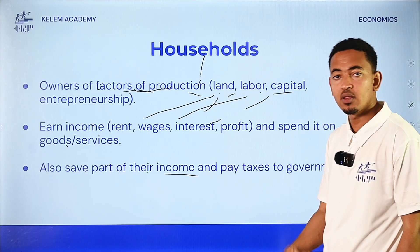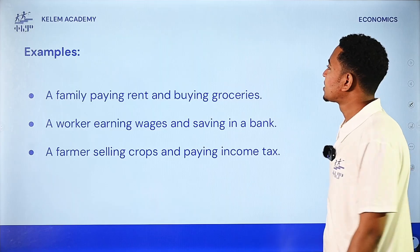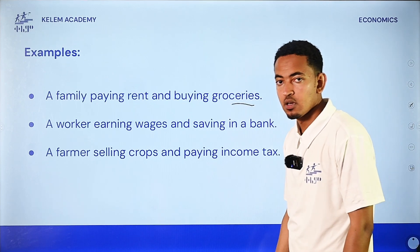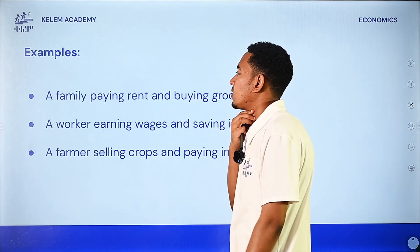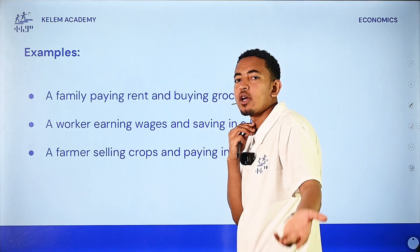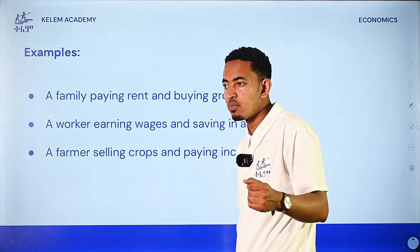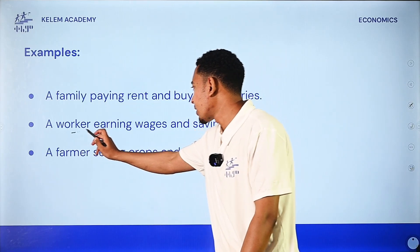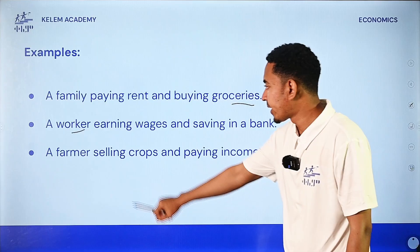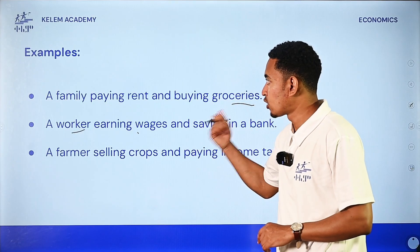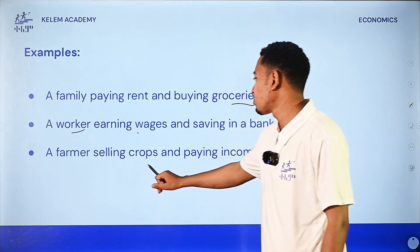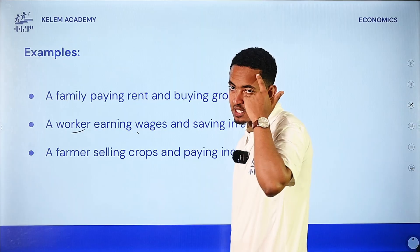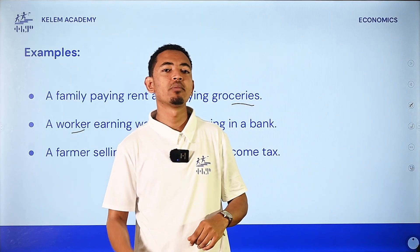This is what the government costs households. For example, a family pays rent and buys groceries. Households also pay income tax to the government.